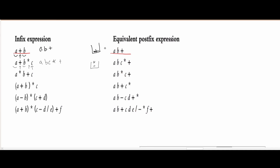For the next one, we have A times B plus C. We have the operand A, so we're going to have A here. We're going to make our stack — it's going to have the multiplication inside of it. Then we are going to have our B. And then we have this plus. Plus is lower than our multiplication, and if it's lower than or equal to, we are going to pop whatever we have in our stack. So we are going to put this multiplication into our output and cross it out. And since there's nothing else, we're going to put the plus in the stack. Then we have C. Since there's nothing else after the C, we are just going to pop the plus. And that's how we would get the equivalent postfix expression.